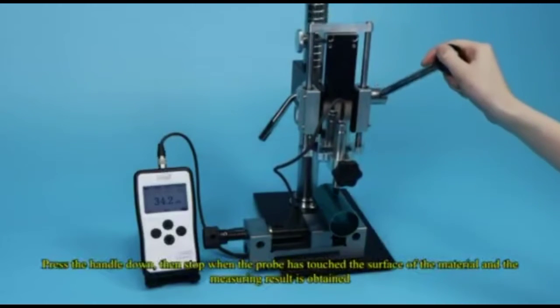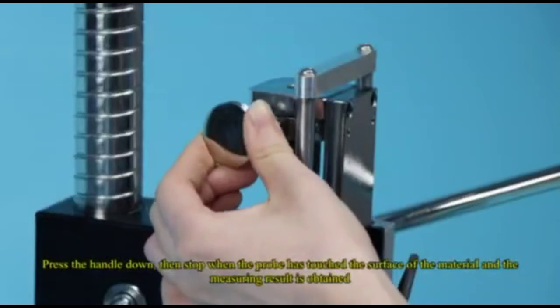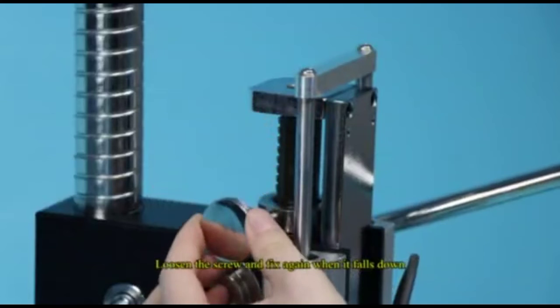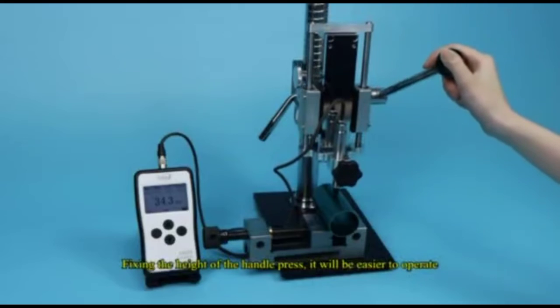Press the handle down, then stop when the probe has touched the surface of the material and the measuring result is obtained. Loosen the screw and fix again when it falls down. Fixing the height of the handle press, it will be easier to operate.